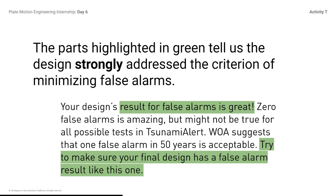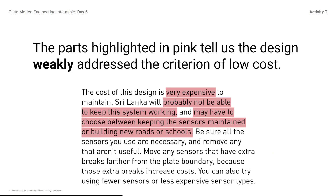The parts highlighted in green tell us the design strongly addressed the criterion of minimizing false alarms. Note that the highlighted parts of the paragraph represent feedback on how the design strongly addressed the criterion. The parts highlighted in pink tell us that the design weakly addressed the criterion of low cost — very expensive. Probably not be able to keep the system working, and may have to choose between keeping the sensors maintained or building new roads or schools.